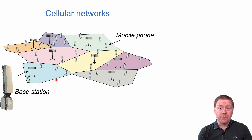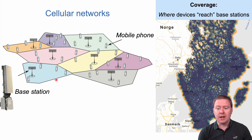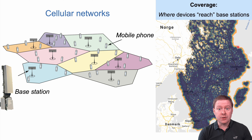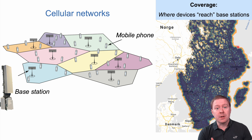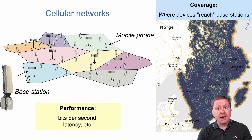An important thing for these networks is that they should cover large areas. Here is an illustration of Sweden showing which areas have coverage with different generations of cellular technology — that is the basic idea of where we can reach base stations with our devices.